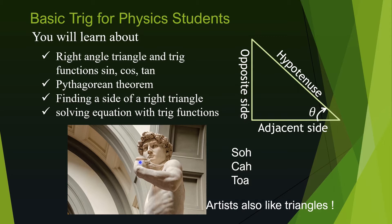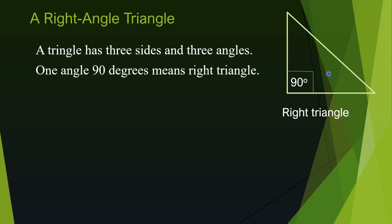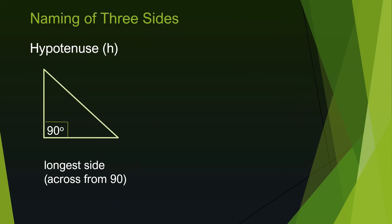Look at this picture — artists also like triangles. The arm of David in this famous art is a triangular shape. Now let's learn about a triangle and a right triangle. A triangle has three sides and three angles. If one of those angles is 90 degrees, then the triangle is called a right triangle. The sum of all angles in a triangle is 180 degrees or pi radians. The longest side is called the hypotenuse.